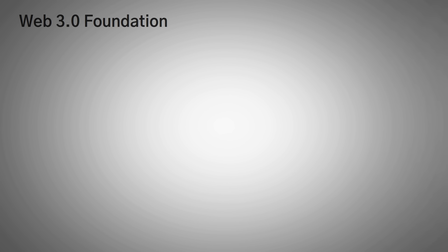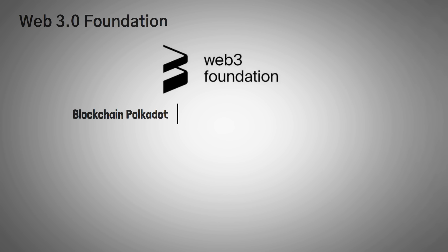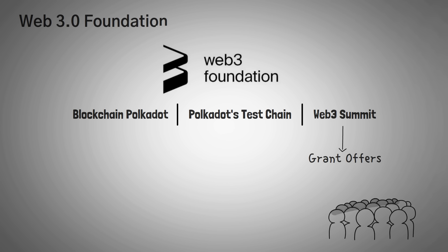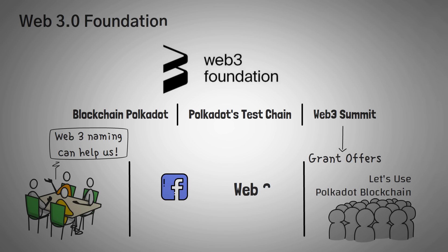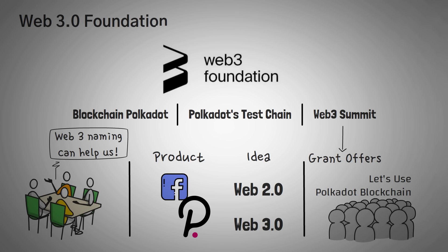I also want to talk a bit about the Web 3.0 Foundation. There is a company called the Web 3.0 Foundation that supports projects for increasing decentralization on the internet. Their three big projects are the blockchain Polkadot, Polkadot's test chain, and the Web 3 Summit — which isn't a great overview of what Web 3.0 actually is. They also offer grants, many of which support and use the Polkadot blockchain. It seems to me the Polkadot team used the Web 3 name as a brand to push their own agenda. To give you an understanding: this would be like Facebook buying a foundation for Web 2.0 and saying they initiated it. Facebook is a company, while Web 2.0 is an idea — the same way Polkadot is a blockchain and Web 3.0 is an idea. One doesn't own the other.